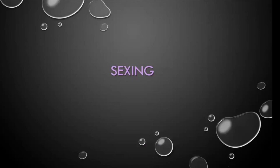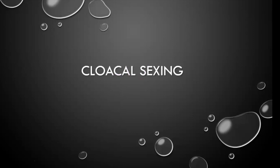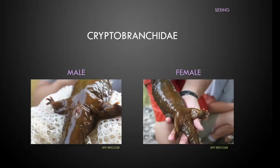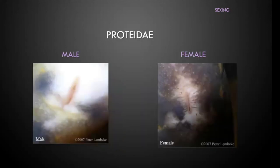To breed your salamanders you need to know how to tell a male from a female. Cloacal sexing is something I get asked about a lot. In cryptobranchids when in breeding season, males have a little donut-shaped cloaca and females do not, but outside of breeding season it's very difficult to tell. In proteids — mud puppies and in theory olms — the males have little papillae that, when in season, get fronds on them, little feathery bits; females don't have that.